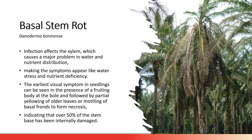This fungi infects the stele and causes a major problem in water and nutrition disruption. That is why we see the plant looking like it is wilting. The symptoms appear like water stress and nutrient deficiency — and actually it really is water stress and nutrient deficiency — because the stele has been broken and infected by Ganoderma boninense.